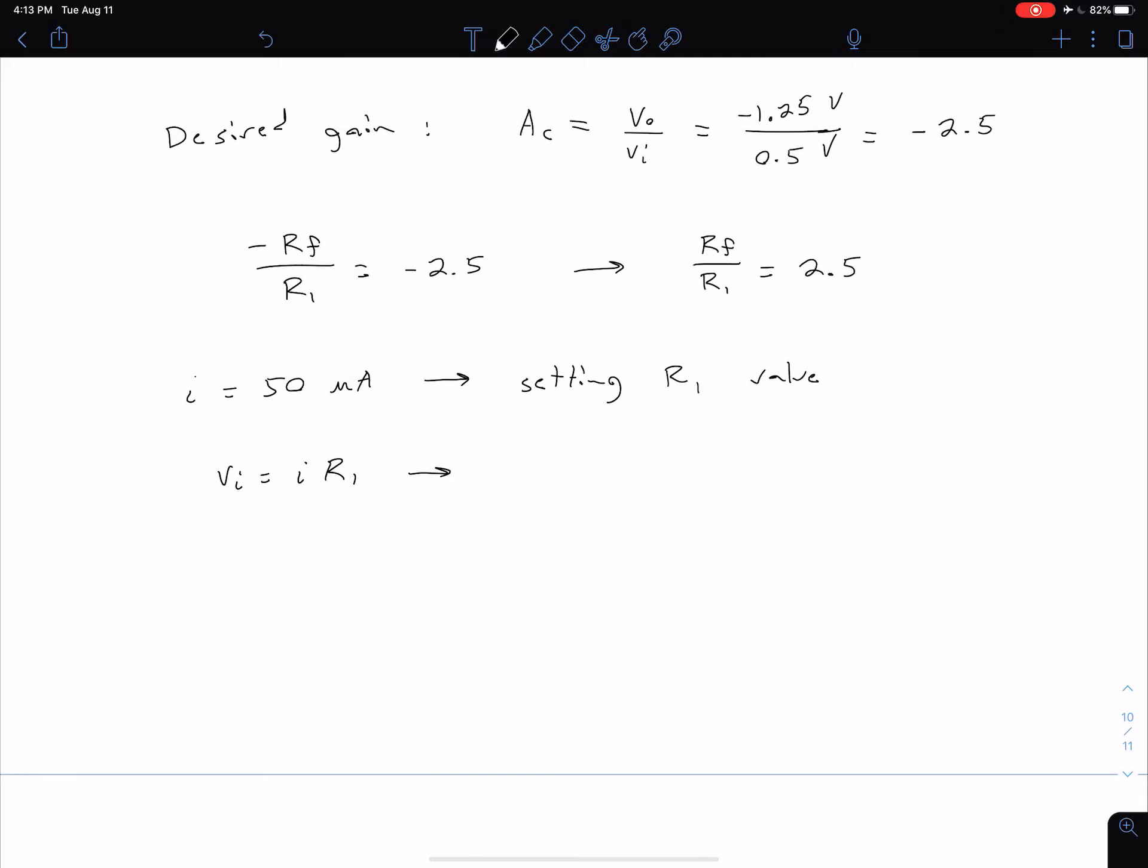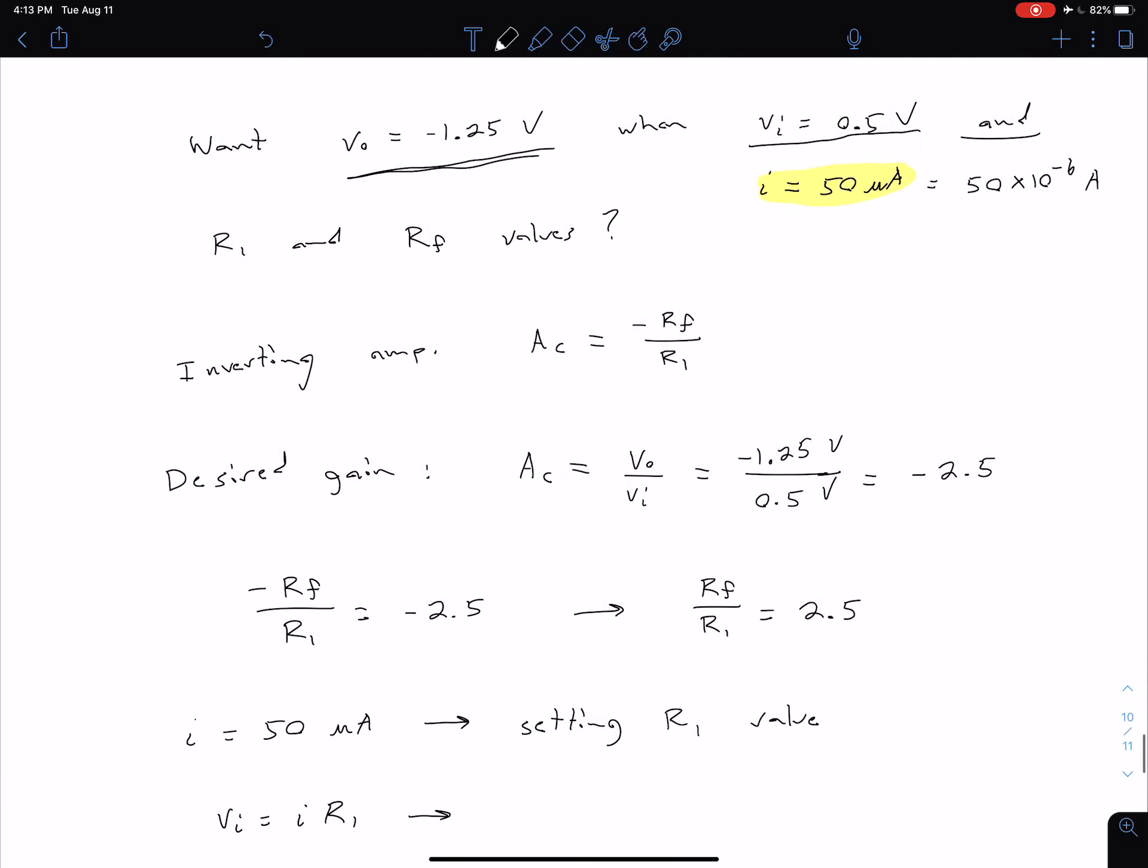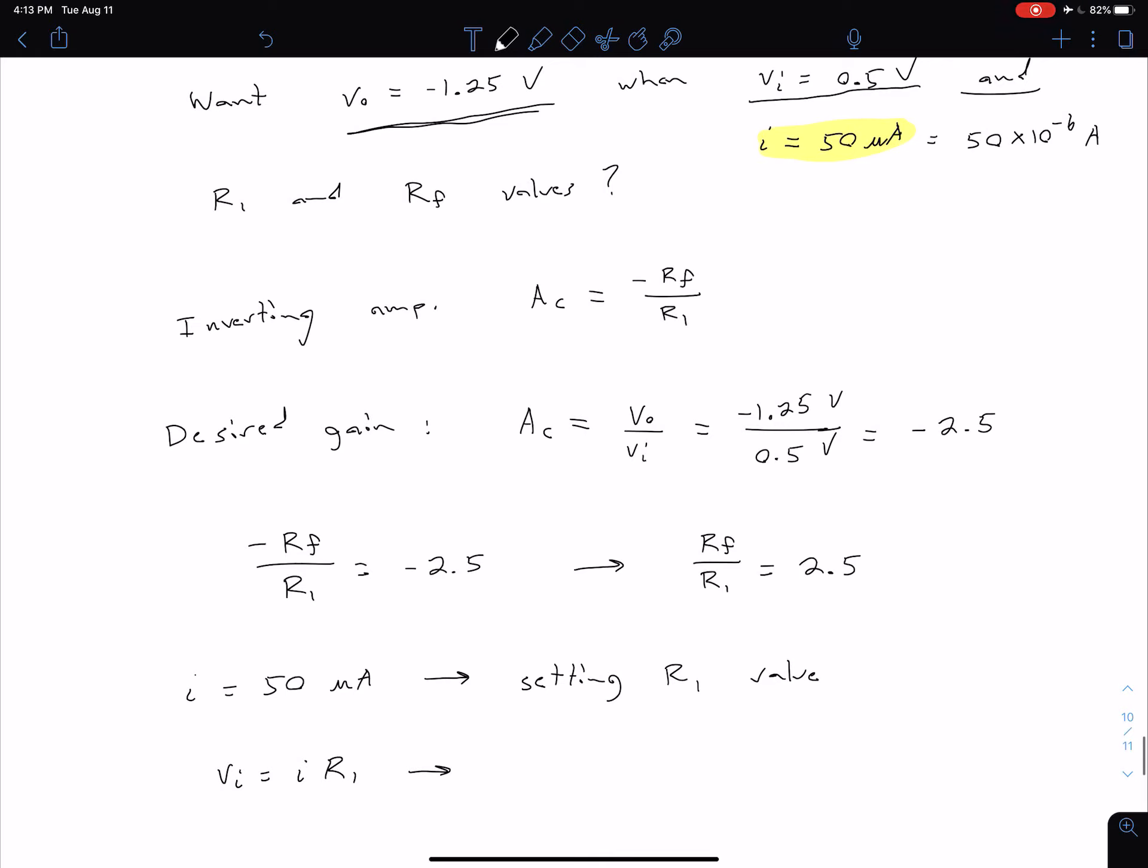So from that, we know what the input voltage is and what that current is based on our two given conditions up here in the top right of the screen. So plugging in those values, we have that our R is equal to VI divided by the current I, so 0.5 volts divided by 50 times 10 to the minus 6 amps.